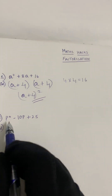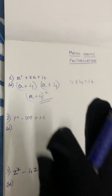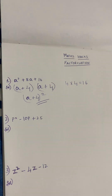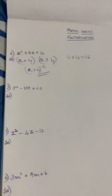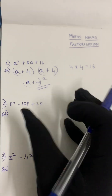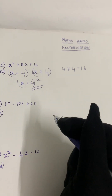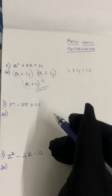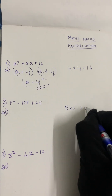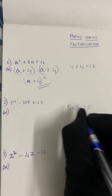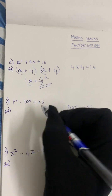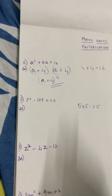Now let's solve the second sum using the same method. The question is p squared minus 10p plus 25. The first step: we have to assume any two numbers — if we multiply we get 25, and if we add or subtract we get 10. Let's take 5, because 5 into 5 gives you 25, and 5 plus 5 gives you 10.